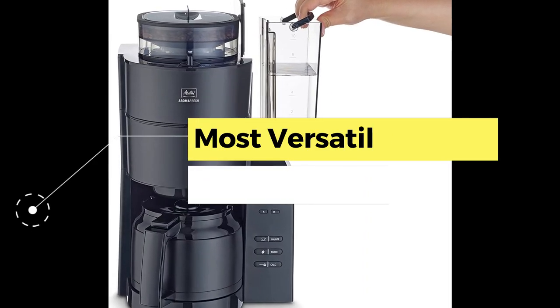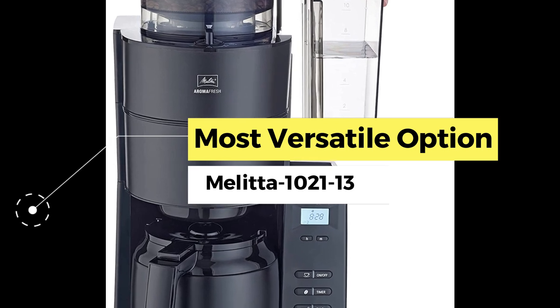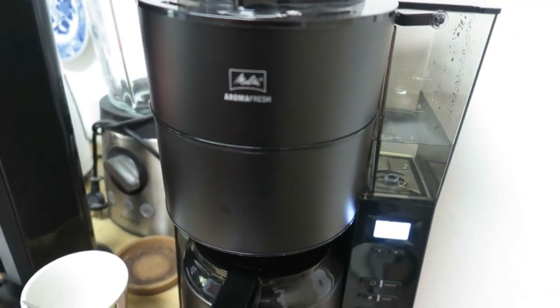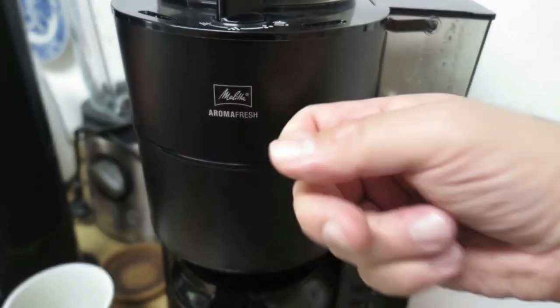Next, the most versatile option: the Melita 1021-13. One key factor for buying a coffee machine is its carafe type. There are generally two standard options.